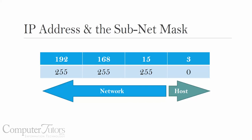Hi, this is Bob Cirico, the Computer Tutor. In an earlier lesson, we talked about the importance of an IP address and, more importantly, the subnet mask and how the subnet mask told us the difference between the network address and the host address. So when we look at the IP address 192.168.15.3, we have to decide what part of the number is the network address and what part is the host address.